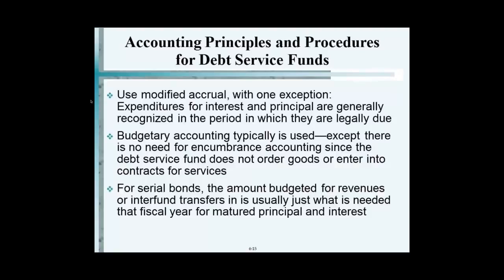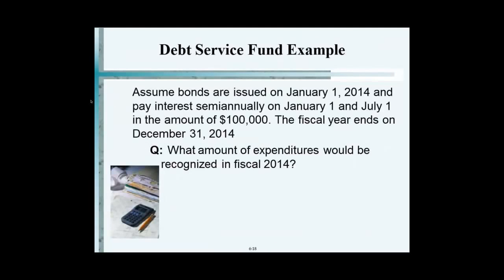Do people understand that? Do you see how... Let's take a look at an example. Assume bonds are issued on January 1 and pay interest on January 1 and July 1 in the amount of $100,000. The fiscal year ends December 31.